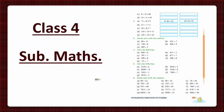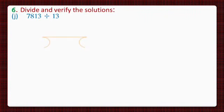In these questions we have to divide a 4 digit number by a 2 digit number. Let's do part J. Here we have to divide 7813 by 13.